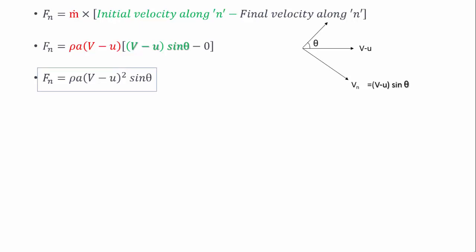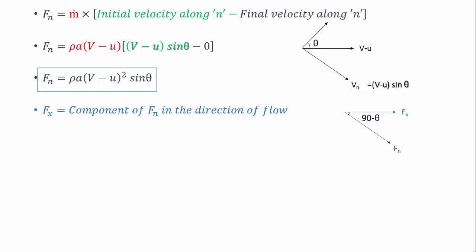Now the force acting along direction n is known. Let's move on to the force acting in the x direction. The angle between the normal and the x direction is 90 degrees minus theta. The component of force Fn along the x direction is Fn times cos(90 minus theta). Since cos(90 minus theta) equals sine theta, the force acting in the x direction is rho times A times (v minus u)² times sine² theta.